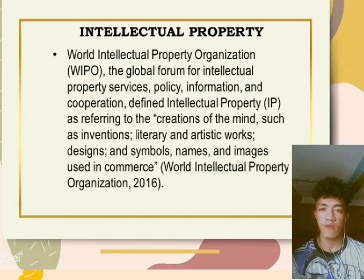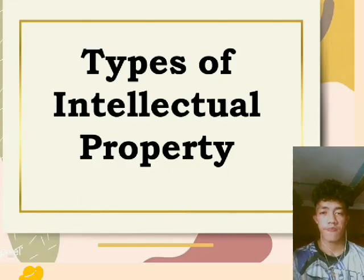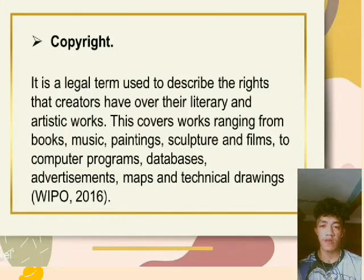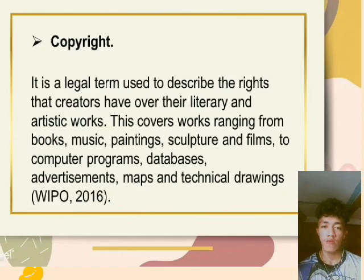World Intellectual Property Organization, 2016. Types of Intellectual Property. The first one is Copyright. It is a legal term used to describe the rights the creators have over their literary and artistic works. Covered works range from books, music,